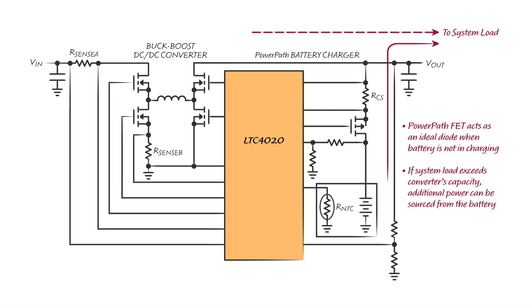If the system load current exceeds the buck-boost converter's maximum capability, additional power can be efficiently provided from the battery through the system load.